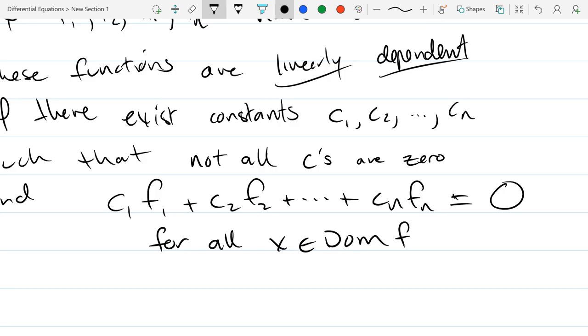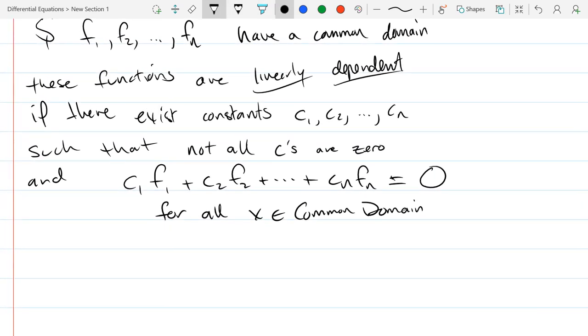So that not all the C's are 0, and C1·f1 + C2·f2 + ... + Cn·fn is equal to 0. Now, if f1 through fn were just variables, we would basically be done here. But we have to be a little careful, because with functions, they have to add up to 0 for every x in their domain, not just for one or two x values. But this has to happen for every single x in their domain.